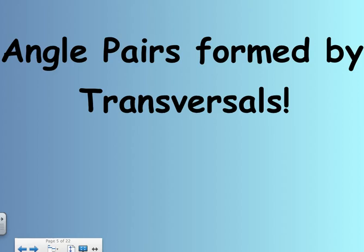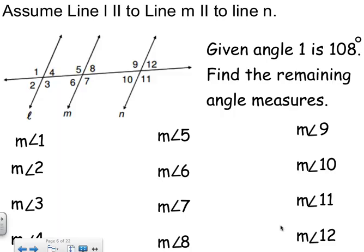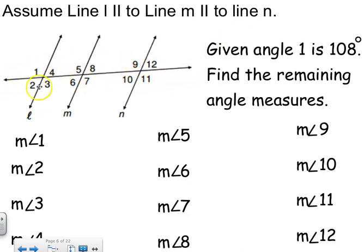Now that we know the vocabulary of what happens when you've got parallel lines cut by a transversal, we're going to apply some angles, numbers, and algebra to solve them. Assume that line L is parallel to line M, which is parallel to line N — so basically three parallel lines. That means this line right here would be my transversal, so all my vocabulary words apply to this problem.